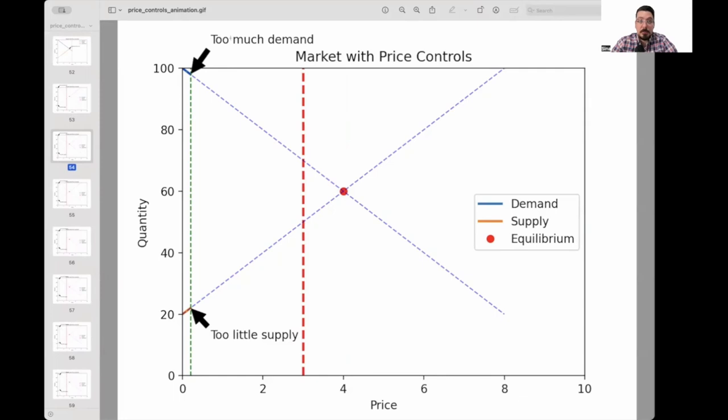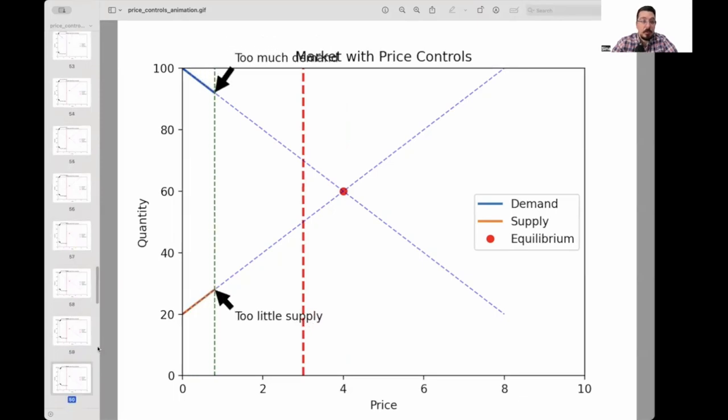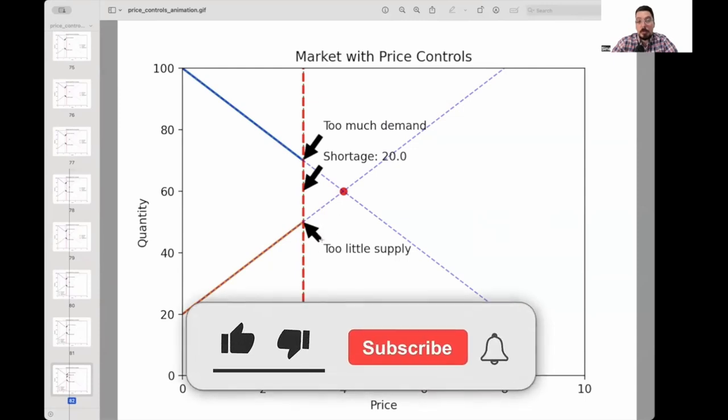Again, as you can see, in the beginning, we have a high demand and low supply. And as the market moves, price reaches this point, price of three, and it can't move beyond that. And we are stuck at a place where shortage is permanent, there is no way for the market to incentivize more production.